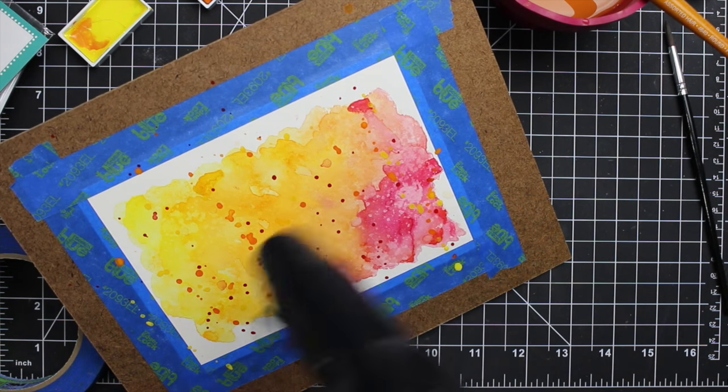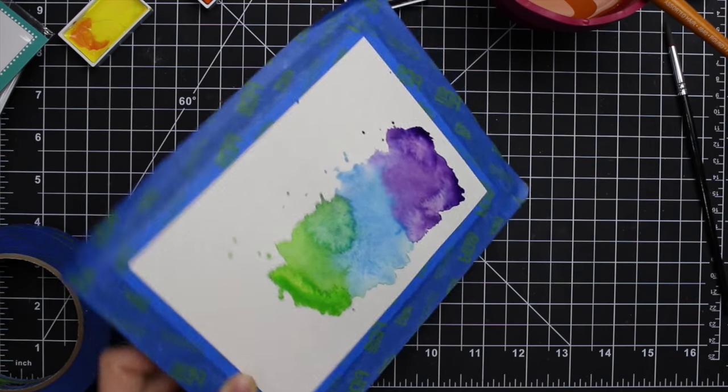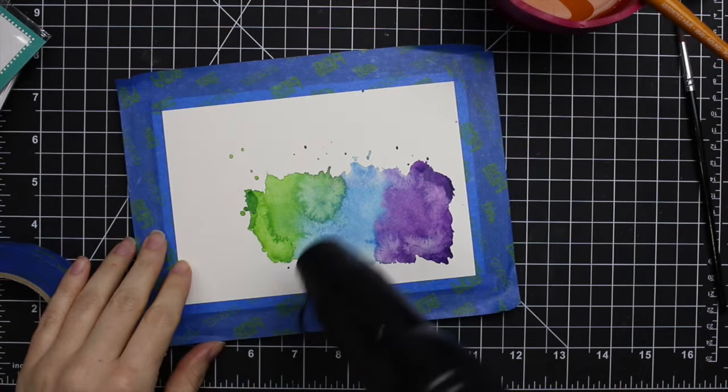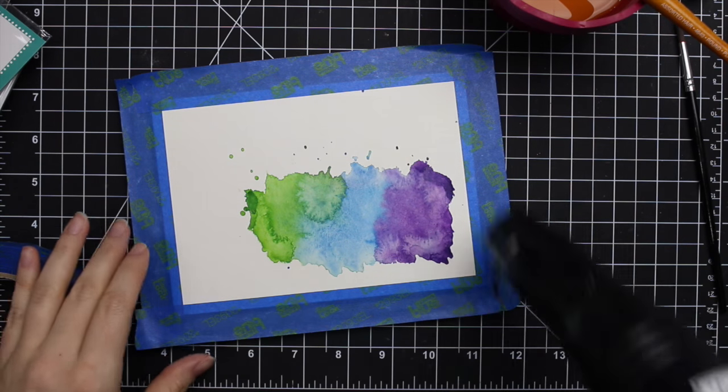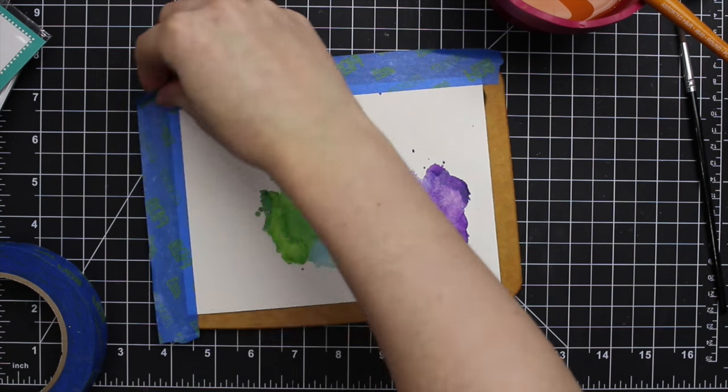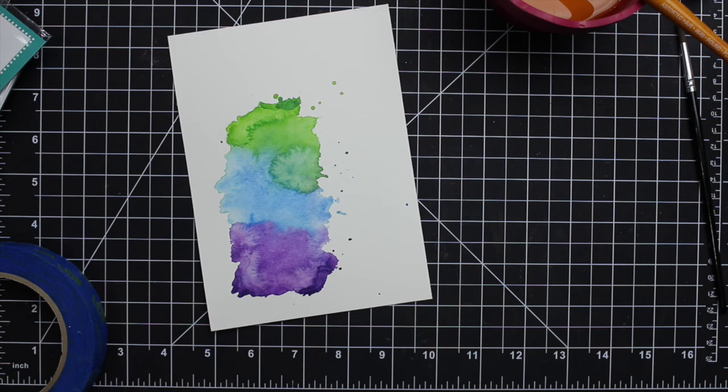My camera battery died while I was in the middle of this and I was too involved in it all to even notice. So I heat set it and actually the heat setting flattened it out. Whereas I don't know if you guys could tell very much there but this one that I was letting air dry it was really starting to bubble where the watercolor was.